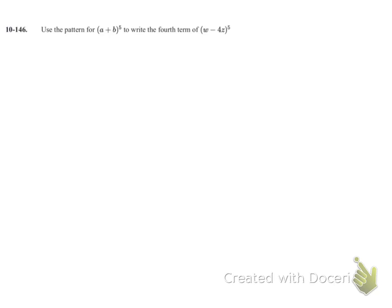Problem 146. We're going to take a look at our pattern that we've been figuring out for a plus b to the fifth to write just the fourth term of w minus 4z to the fifth.